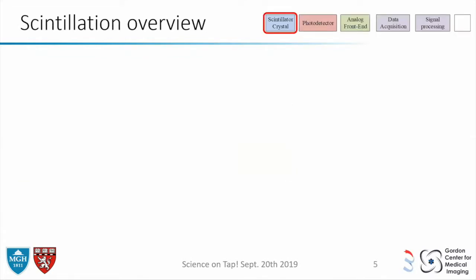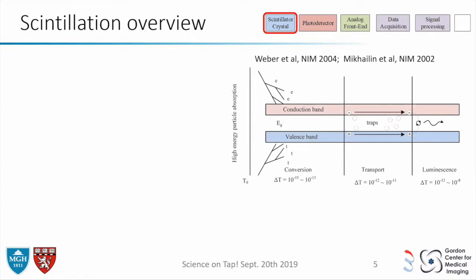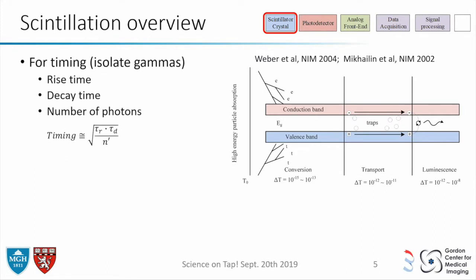Once the gamma comes in, it hits the atoms and gives energy to the electrons. They slowly come back to a stable state, multiplying along the path, and at the end you get about 20,000 light photons — that's not a lot. How fast can this be? It depends on the crystal materials, the rise time — how quickly it produces light — the decay time, how long it takes for the whole signal to be produced, and the total number of photons. This is useful for comparing crystals, especially for time-of-flight scanners.